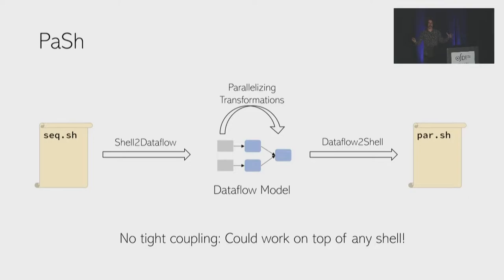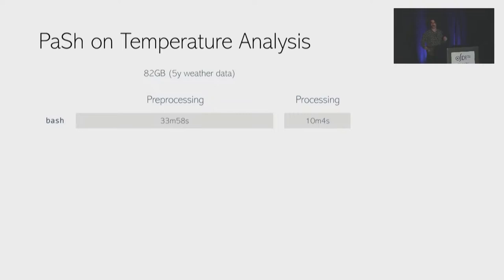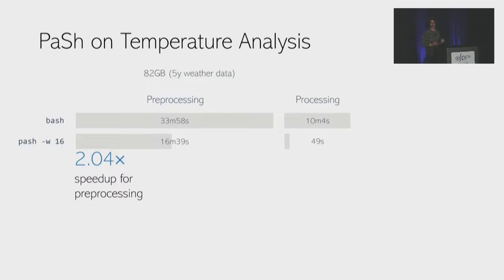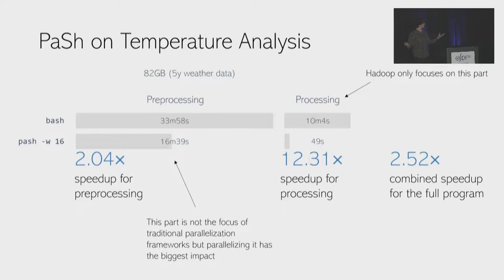Let's see what PaSh can do on the temperature analysis script. We execute the script on bash: during preprocessing, bash takes about 33 minutes, and processing takes about 10 minutes, on 82 gigabytes of five years of weather data. PaSh speeds up preprocessing by about two times and speeds up processing by about 12 times, for a total combined speedup of about 25x. Importantly, while Hadoop and other frameworks only focus on the processing part, PaSh can parallelize the preprocessing too and get benefits that wildly surpass those of just the processing part — holistic performance improvements.